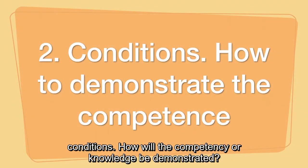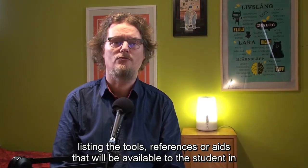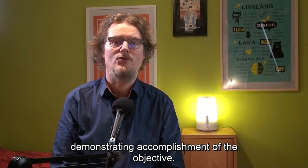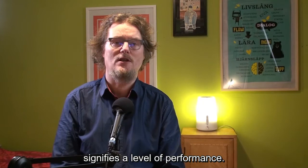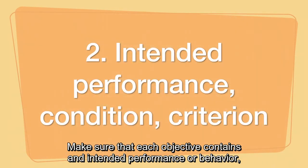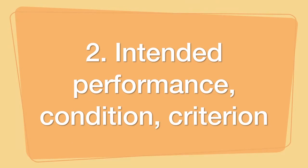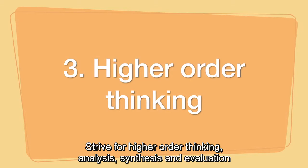Conditions: how will the competency or knowledge be demonstrated? This may include the specific information the learner should use, or listing the tools, references, or aids that will be available to the student in demonstrating accomplishment of the objective. Criterion or degree: what specific set of criteria must be met to demonstrate mastery? This signifies a level of performance. When you write a learning objective, you need to take three steps: include a definite measurable verb that signifies demonstrable learning outcomes; make sure that each objective contains an intended performance or behaviour, conditions for demonstrating competence, and a criterion or degree of performance; and strive for higher-order thinking — analysis, synthesis, and evaluation levels when you can.